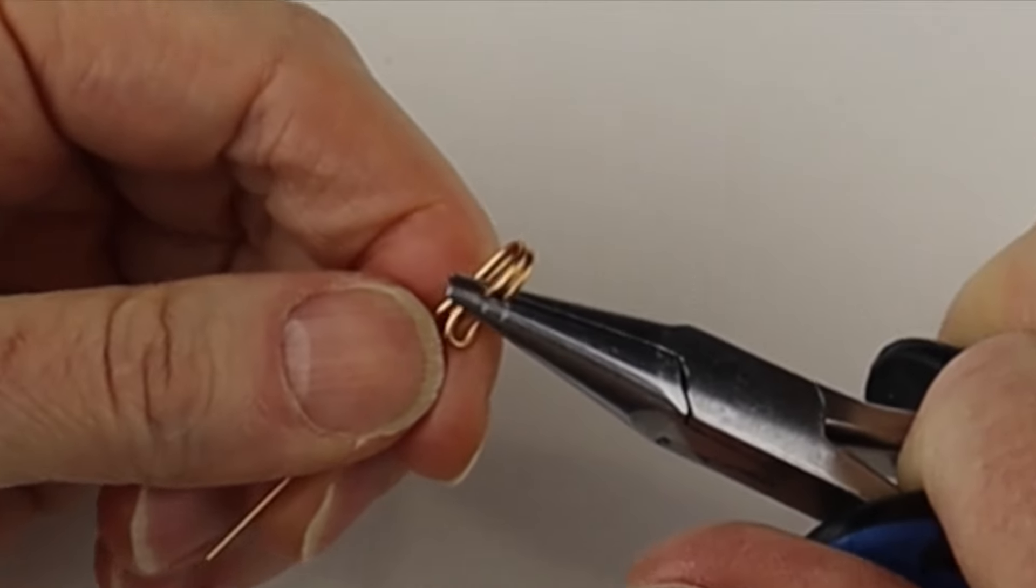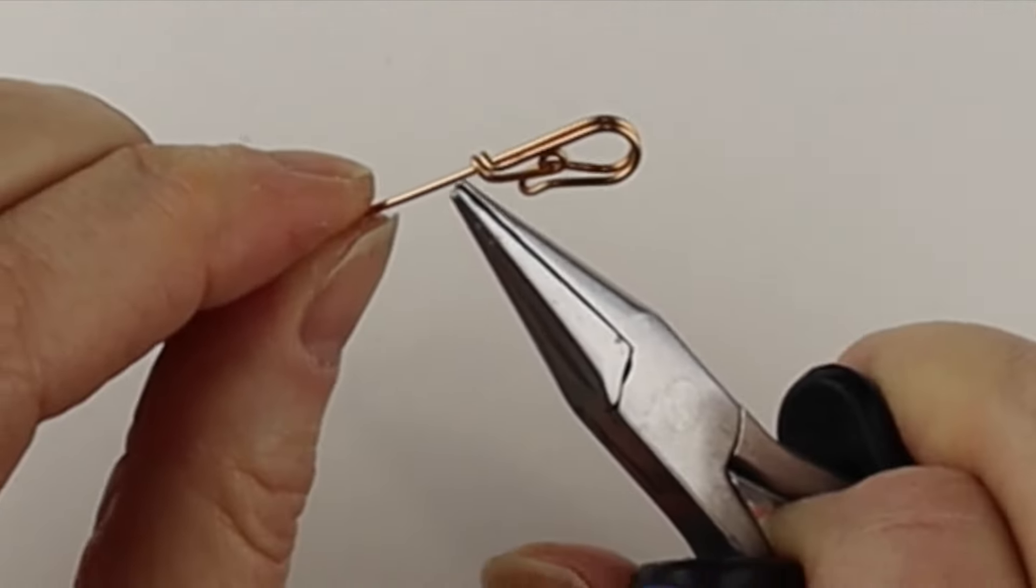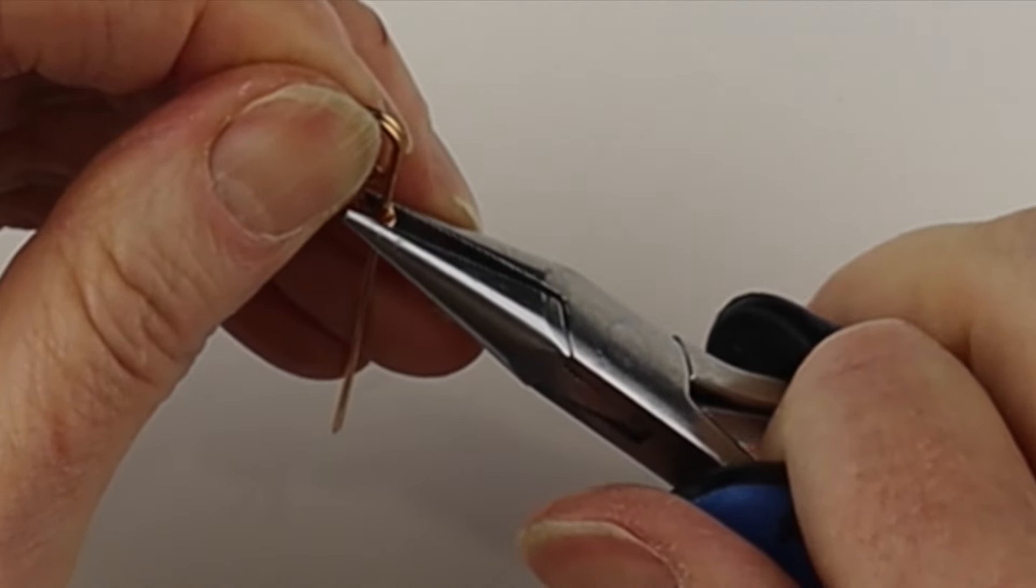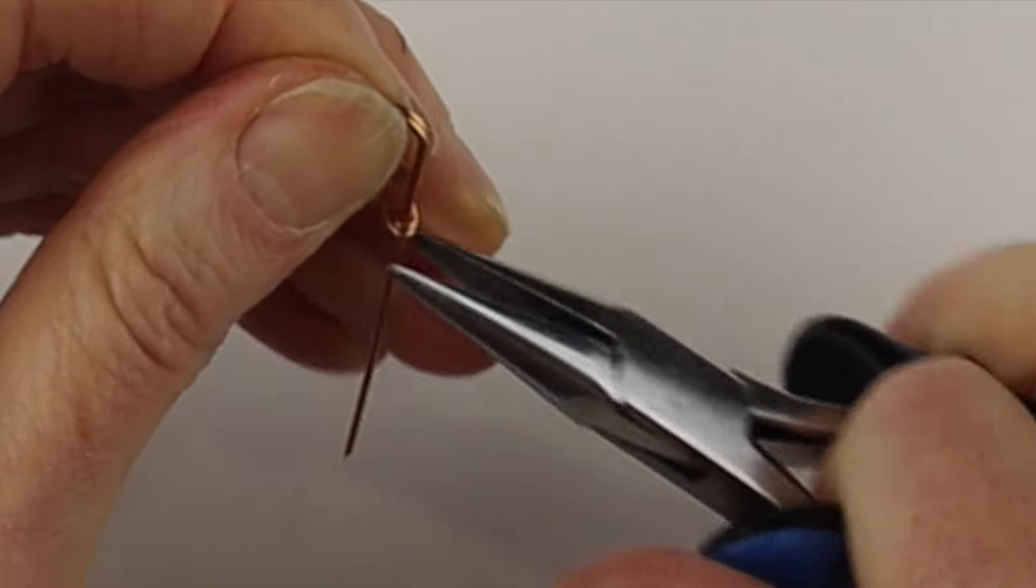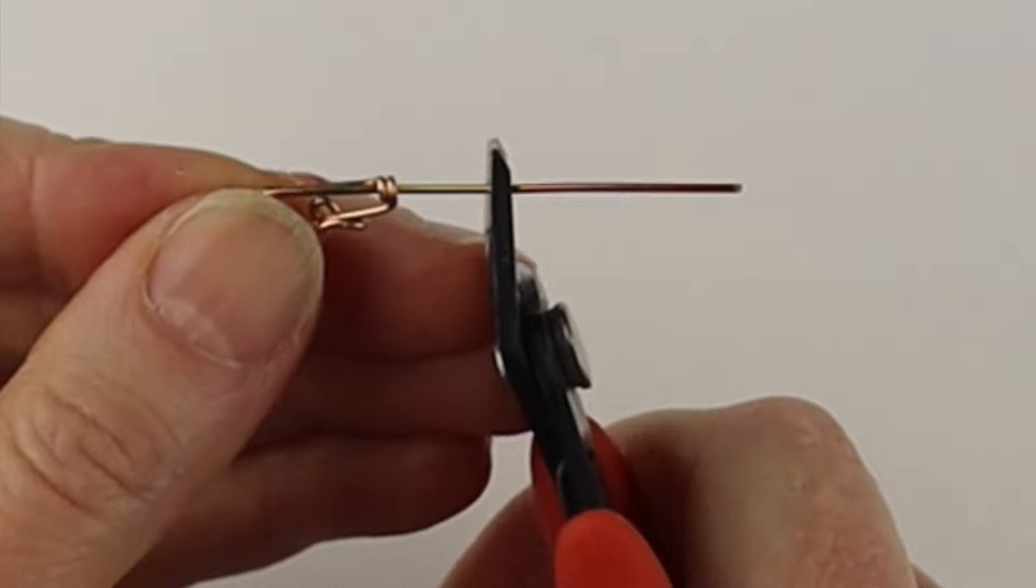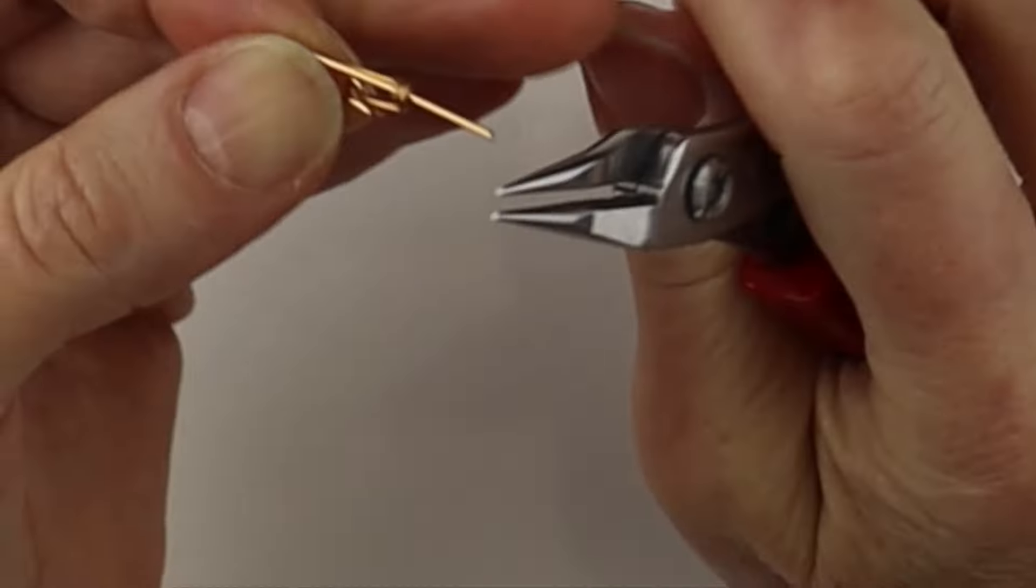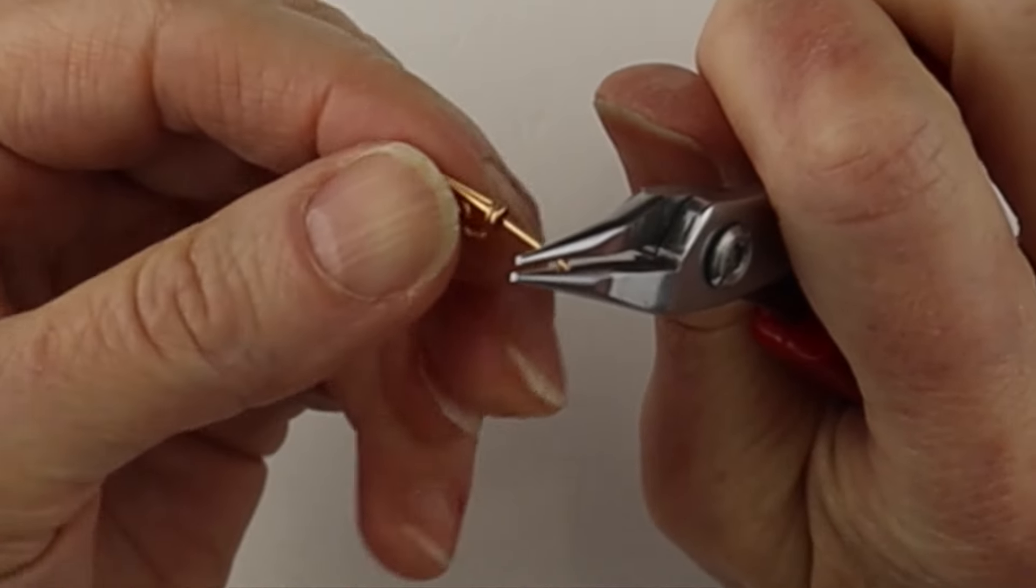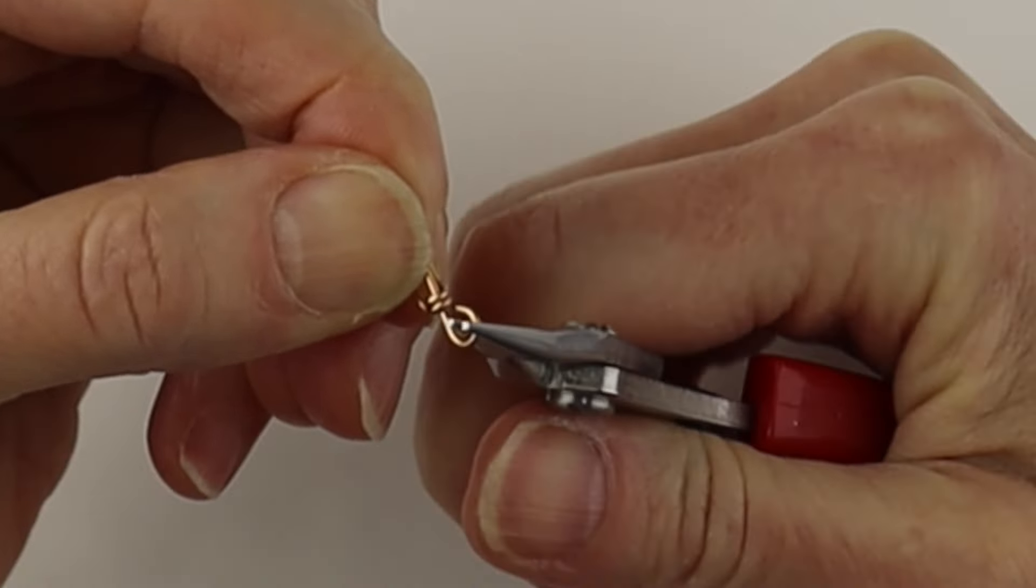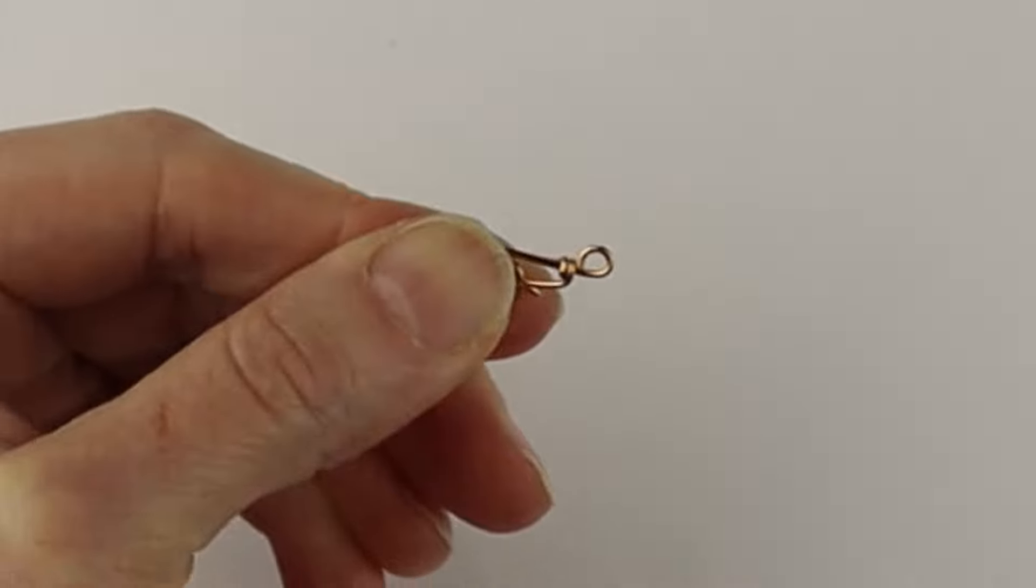Then for this end we just want to make a loop. So this doesn't slide, I'm actually going to give it a little pinch so it's going to stay in place. Then we cut this one to three eighths to half an inch, take our round pliers and loop it around to the back or the front to make sure it's flush, and close it up. So there's our clasp.